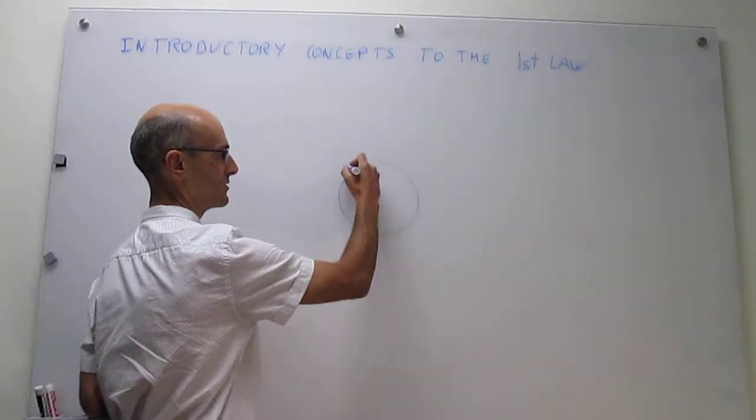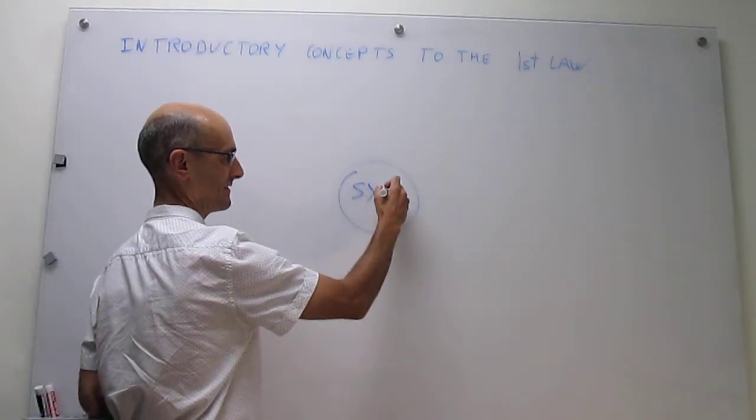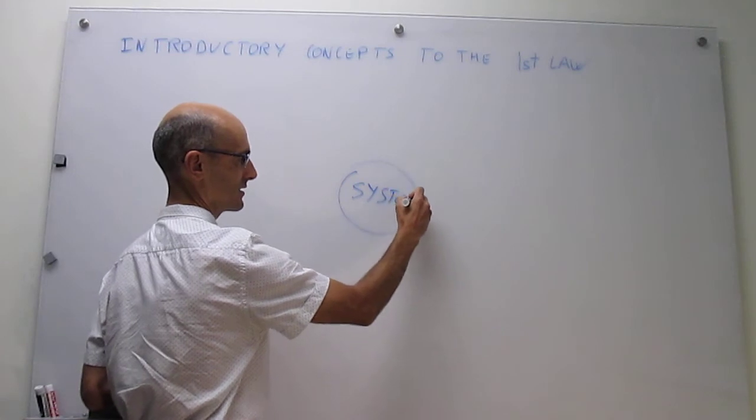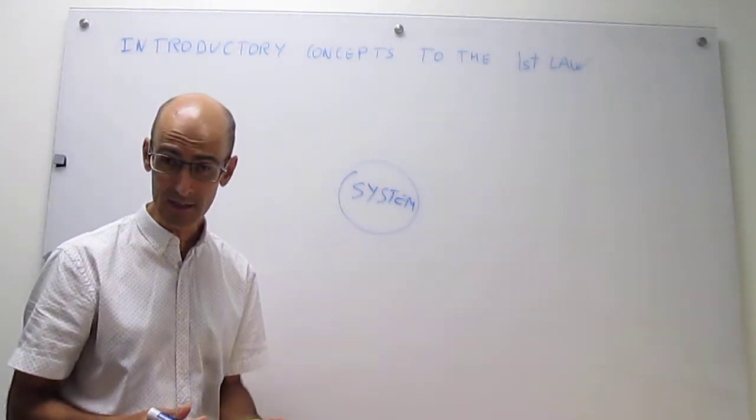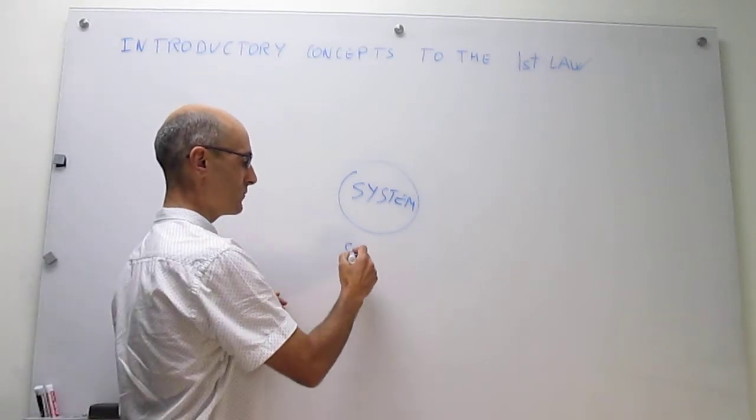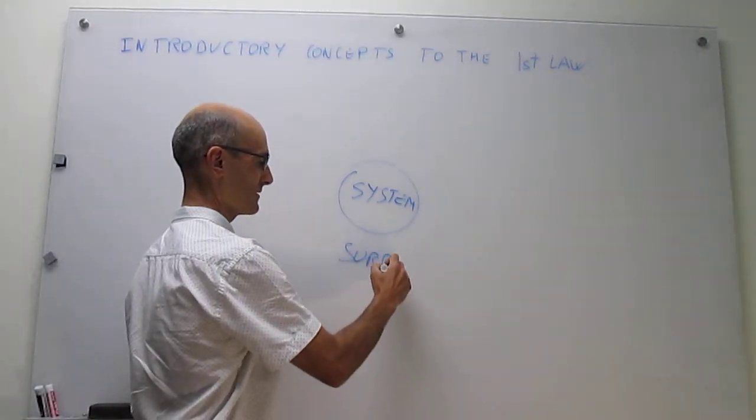And we're going to choose how this partition takes place. The entire universe is just going to be divided into the system, which is what we're interested in, and the surroundings, which is everything that is not the system.